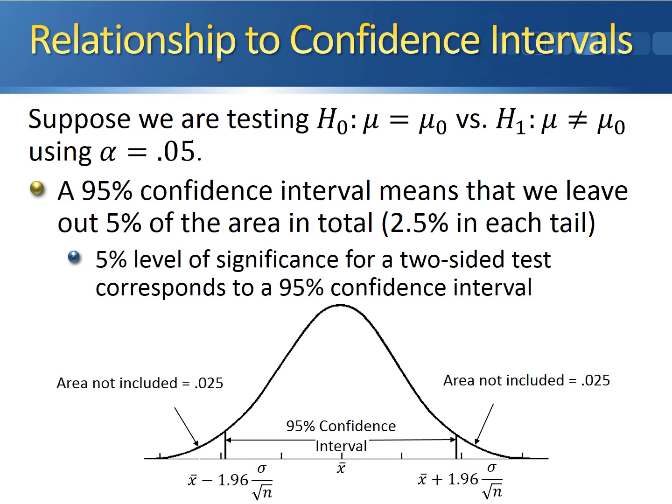What this means is that a 5% level of significance for a two-sided hypothesis test corresponds to a 95% confidence interval.